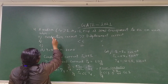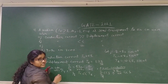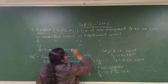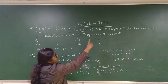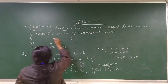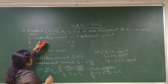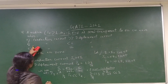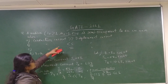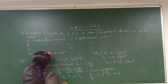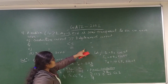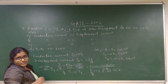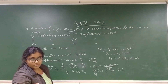The question is: a medium where ε_r is greater than 1, μ_r equals 1, and σ equals 0, is semi-transparent to an electromagnetic wave when: the conduction current is greater than the displacement current; the conduction current is less than the displacement current; the conduction current is equal to the displacement current; or both the conduction current and the displacement current are zero.